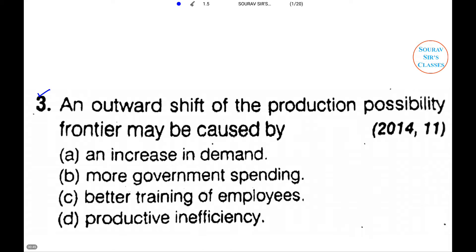In today's tutorial, we'll first solve question number three. This question appeared in the question papers of 2014 as well as 2011. So let us read the question. The question says an outward shift of production possibility frontier, so we have a PPF, and this is X good and Y good.